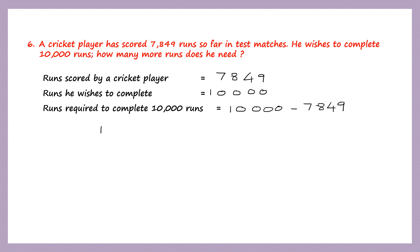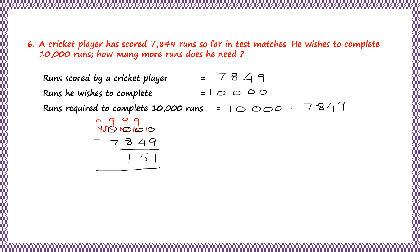Let's do that subtraction. We'll borrow all the way from the leading digit, giving us 10, 9, 9, 9. So 10 minus 9 is 1, 9 minus 4 is 5, 9 minus 8 is 1, and 9 minus 7 is 2. So he needs 2,151 more runs to reach his goal of scoring 10,000 runs.